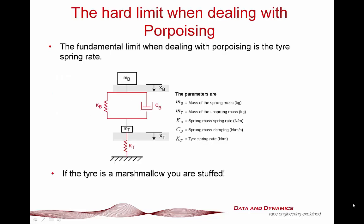In order to kick this discussion off, we need to discuss one of the hard limits when we deal with porpoising. A very key limit is actually the tyre spring rate. If we take a look at our quarter car vehicle model, we've got our body mass, our platform spring rate and damper rate, our unsprung mass, and our tyre spring rate. The nail here is that if that tyre spring rate is effectively a marshmallow, there's not terribly much you can do. To quote the Australian vernacular, you're pretty much stuffed if you're dealing with very, very low tyre spring rate.